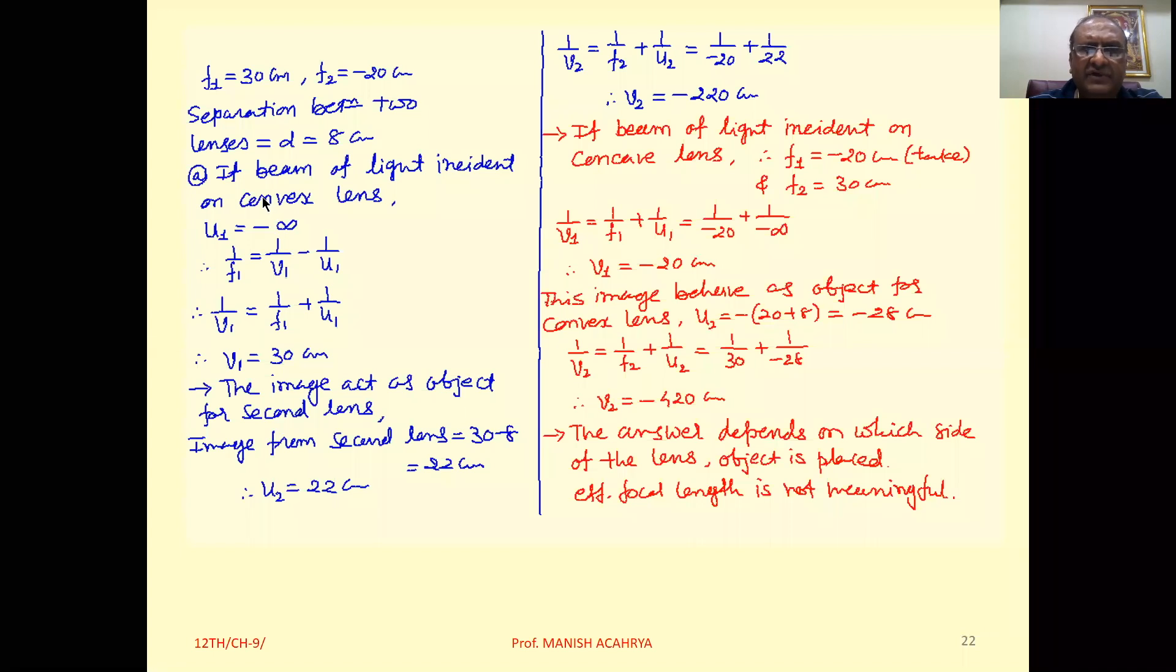We have a lens system where one convex lens and one concave lens are present. So one case is when we consider the lens system and image formation occurs on one side, and another case is when image falls on the concave lens side and image formation occurs there. We need to check whether this makes a difference or not.